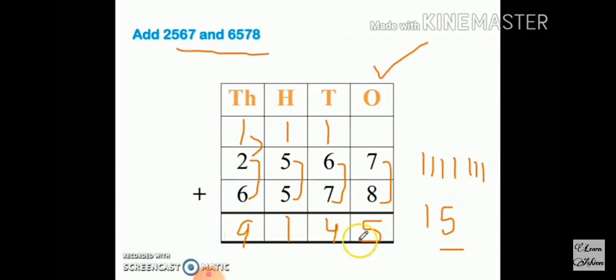7 plus 8 equals 15. Write 5. We make carry over, then we count. If you count 10, then we count once which you have to make carry over.